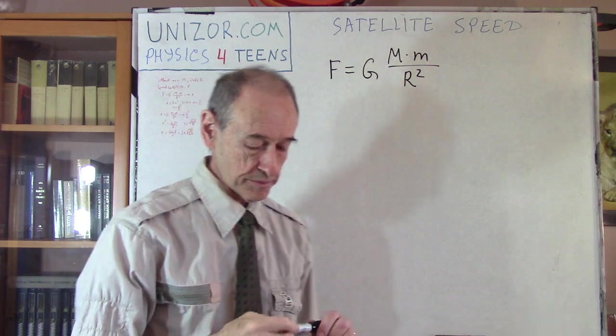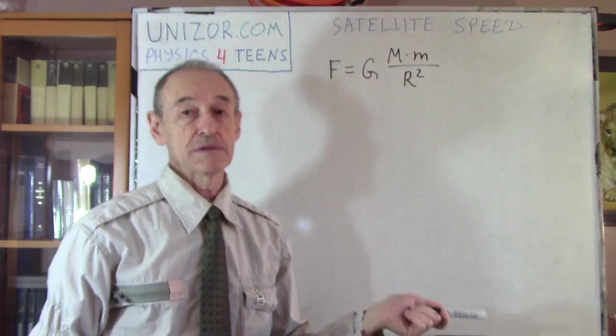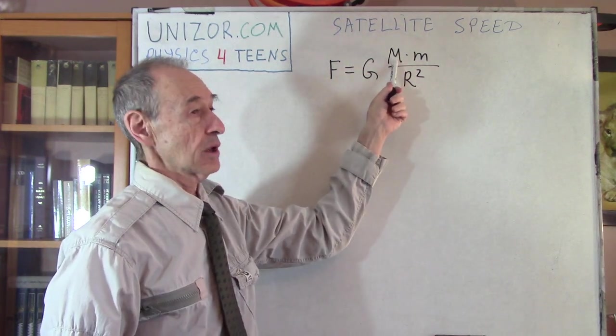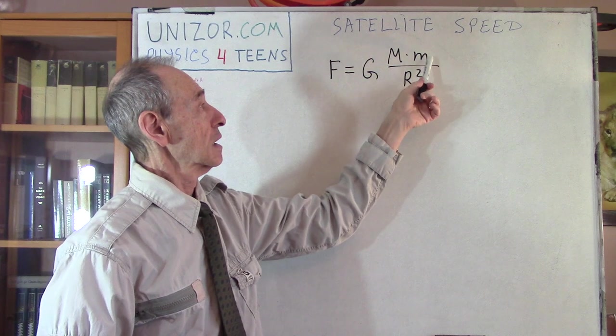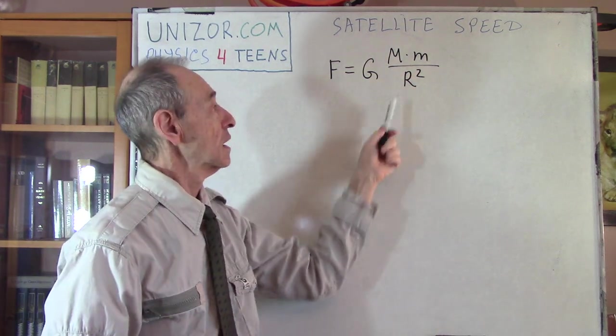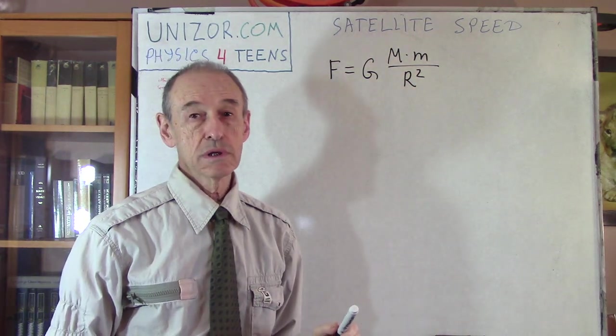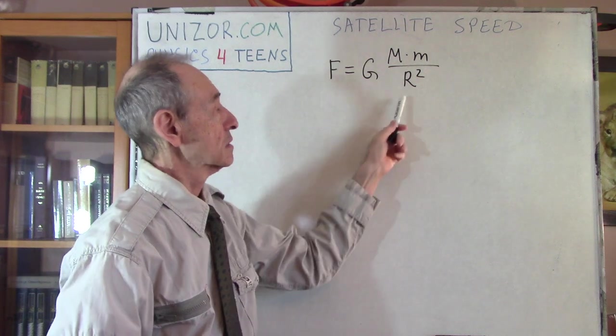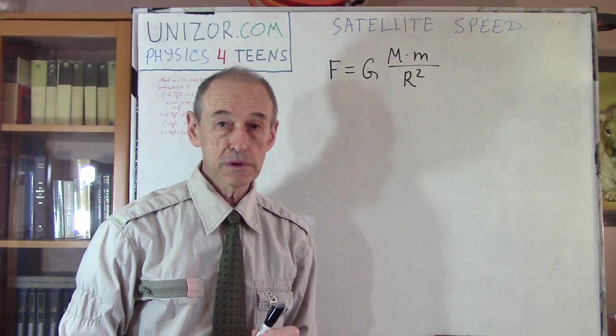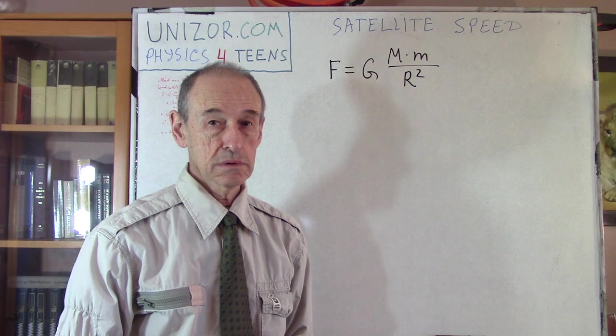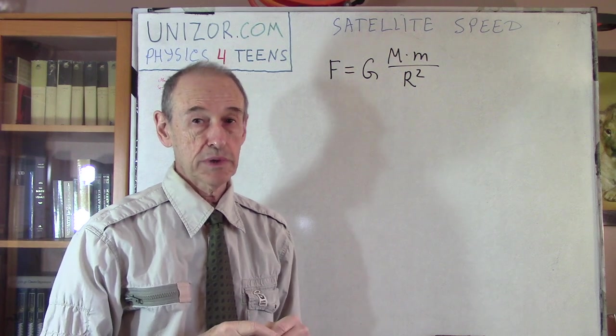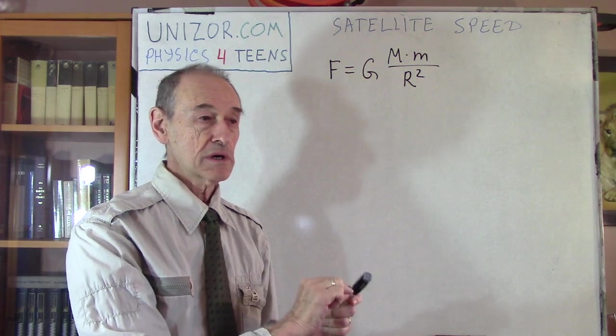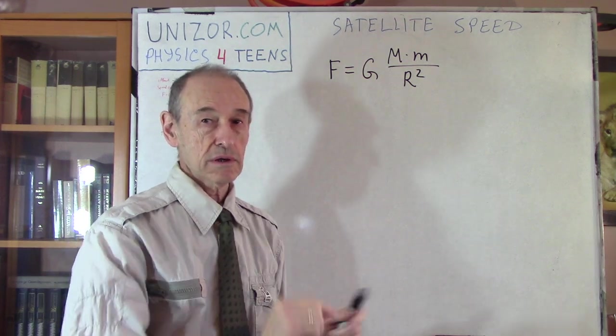I hope it's familiar to you. So, this is the gravitational constant, universal constant. This is the mass of the planet. This is the mass of satellite and this is the radius from center to center. Center of the planet to center of the satellite. The radius of orbit we want that satellite to be rotating around the planet. So, it includes actually the size of the planet.